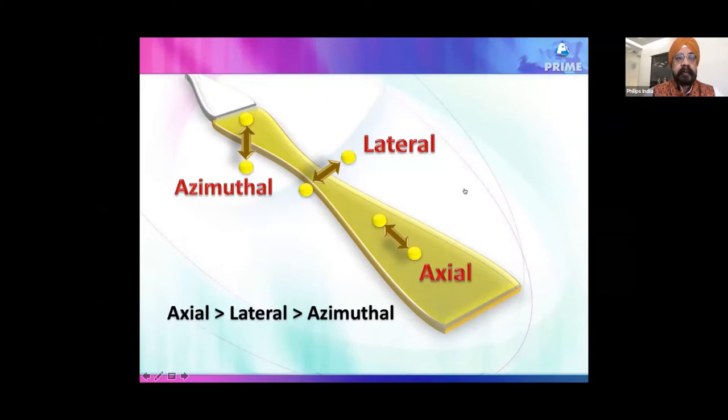Another aspect you should know when improving equipment resolution is that there are three kinds of resolution: axial — along the ultrasound beam line; lateral — on the sides; and azimuthal — the depth or thickness resolution. Axial is the best, so whatever structure you want to see, try to put it in line with the 2D ultrasound beam.